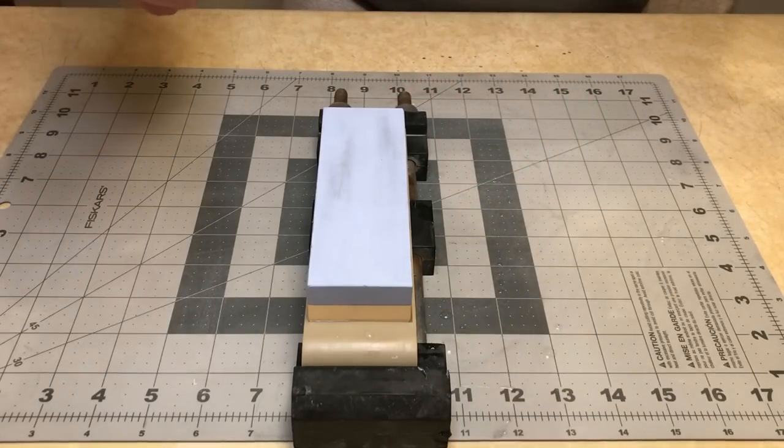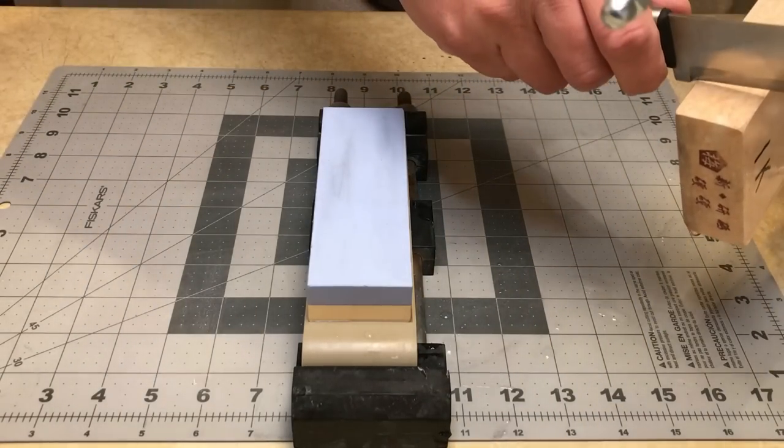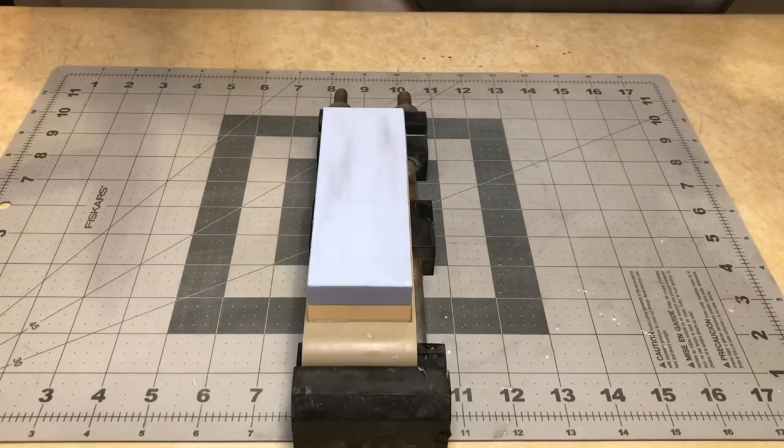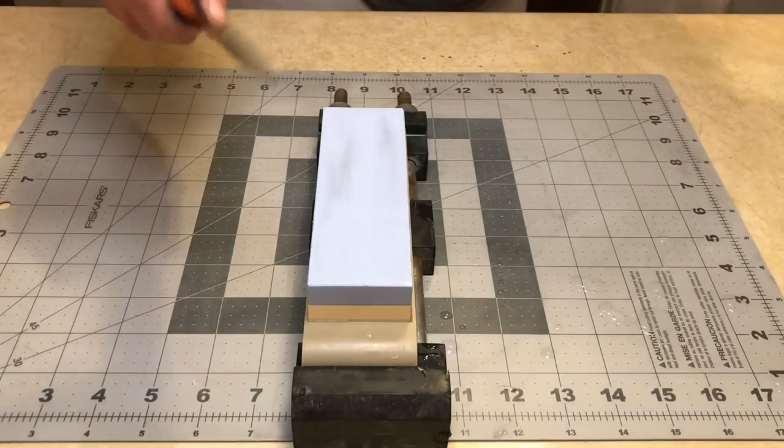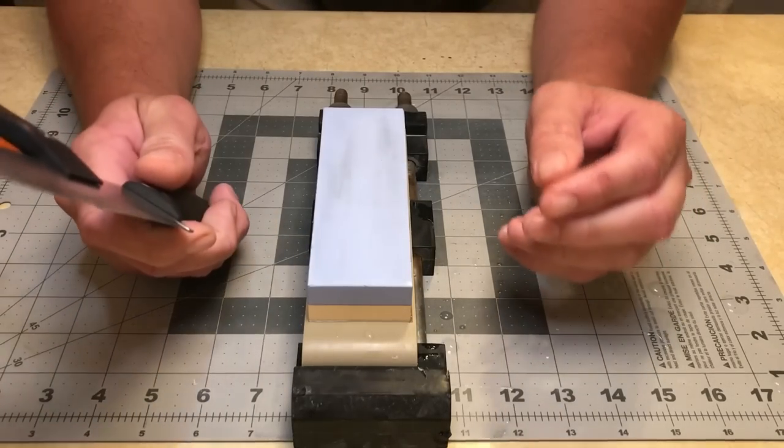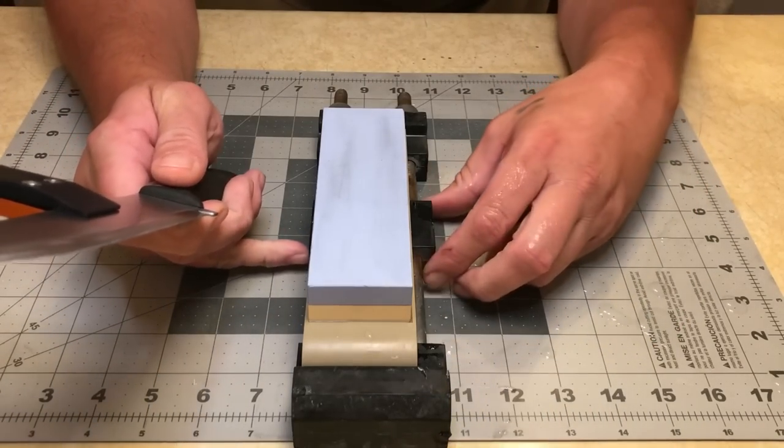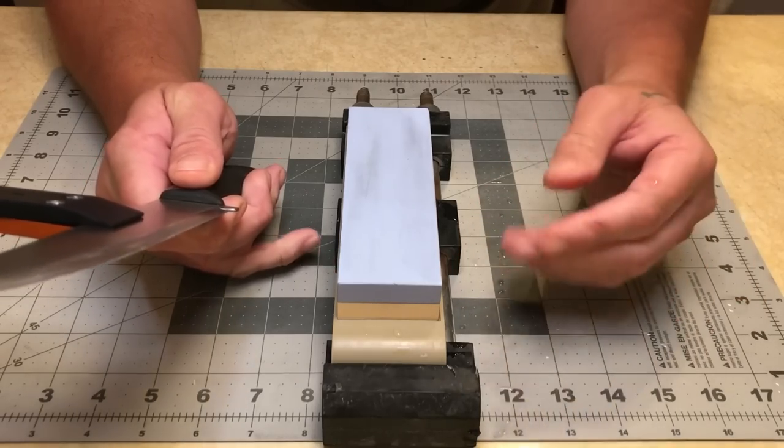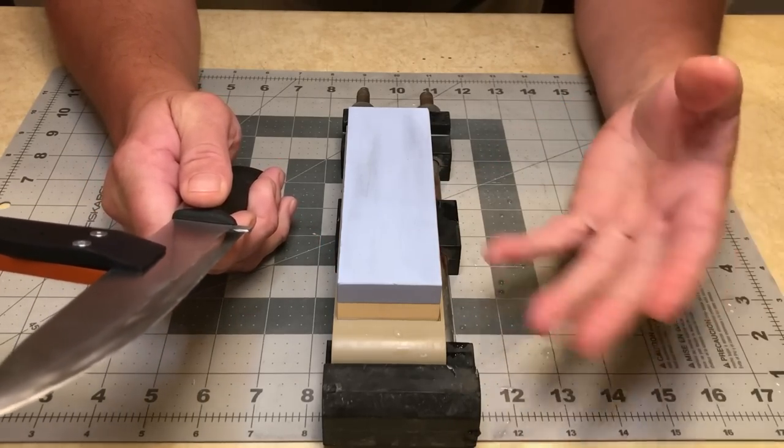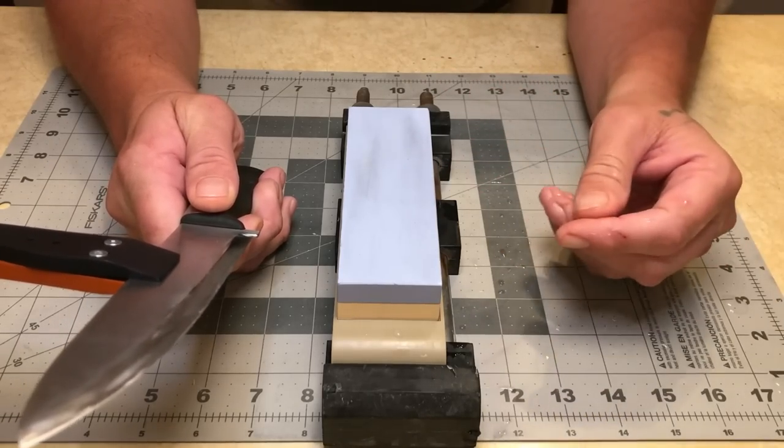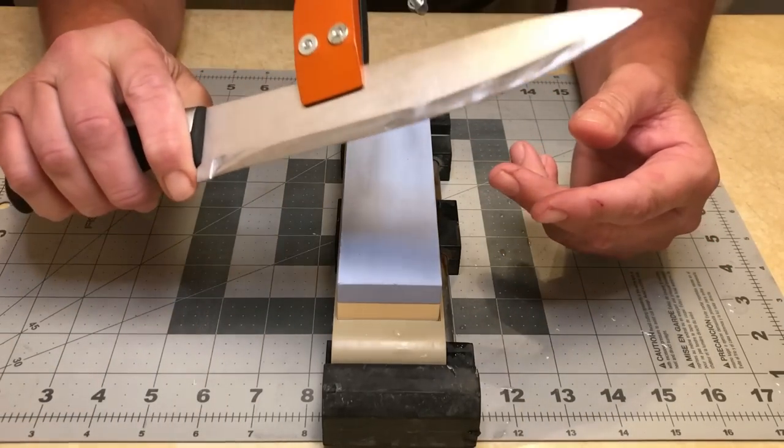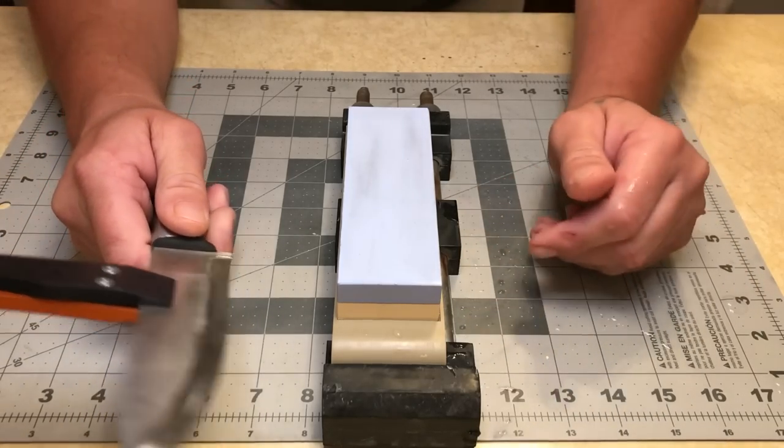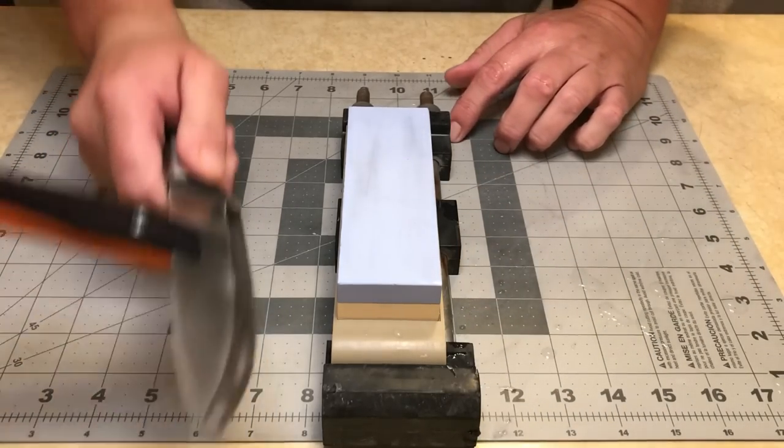I'm gonna go ahead and dull this edge. Now I don't have my angle cube here. JT's knife life has it because he is evaluating the crutch system. So I had to use my iPhone angle finder which is not very accurate. I mean it gives you a ballpark so that's really all I need with this guy. I don't need an exact measurement because this chef knife is basically just an experimental knife for me.